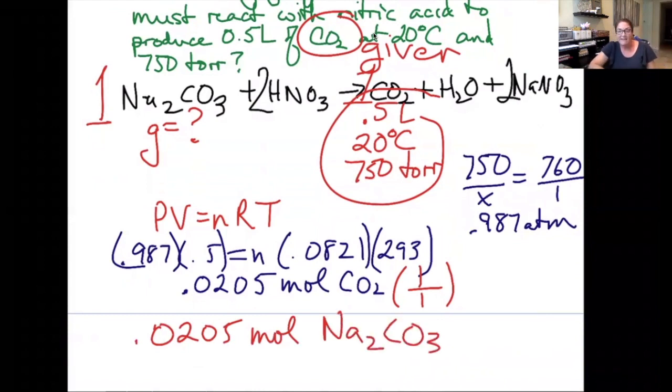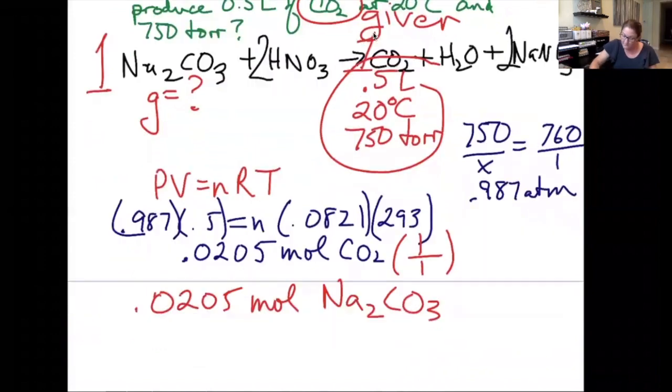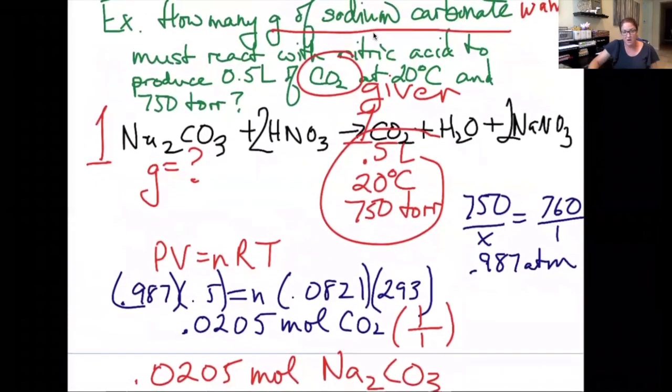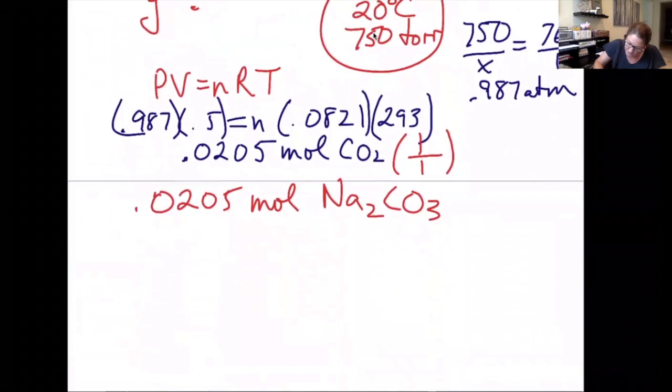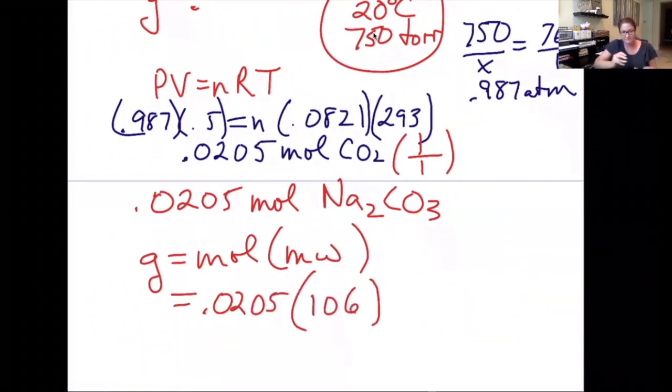My third step, find answer. I'm looking for the grams of sodium carbonate, so I can now do grams equals moles times molecular weight to get those grams. Na2CO3 has a molecular weight of 106, giving me 2.17 grams as my answer to the problem.